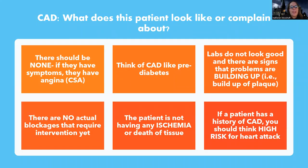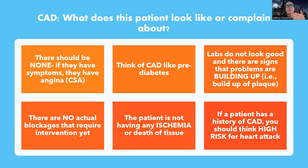A patient with CAD usually has no symptoms. If they are starting to have symptoms, they have CAD but also probably have angina as well - or what we call CSA, which we'll talk about in the next PowerPoint. Think of CAD like prediabetes in the sense that these patients are effectively at risk for much bigger problems like a heart attack. People with CAD, like people with prediabetes, don't usually have symptoms.